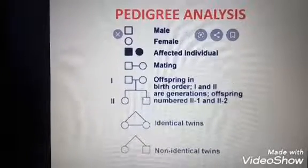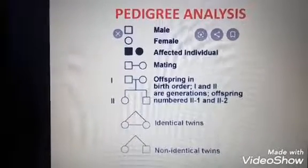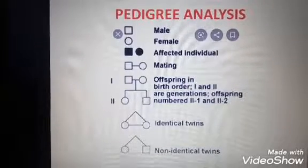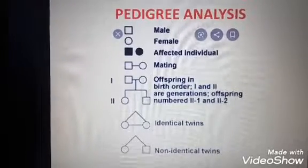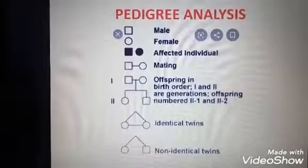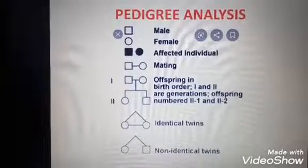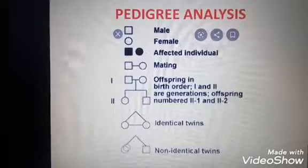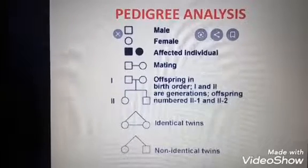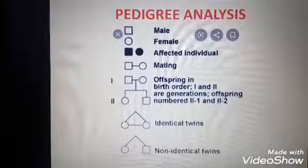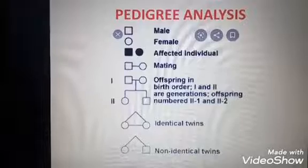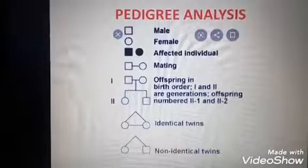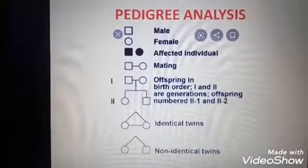We know that in our body two types of chromosomes are present: autosomes and allosomes. We can find out in which chromosomes the trait is occurring with the help of pedigree analysis. The importance of pedigree analysis is that it is useful for genetic counselors to advise couples about the possibility of having children with genetic defects like hemophilia and thalassemia.